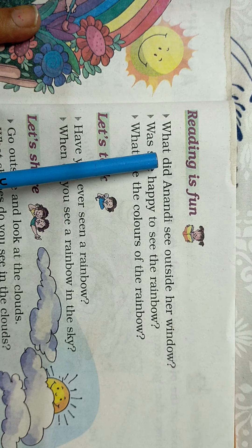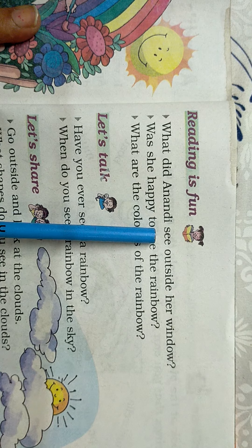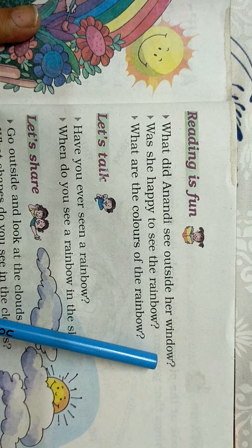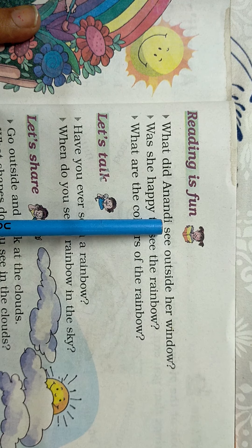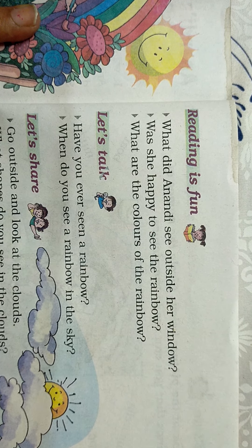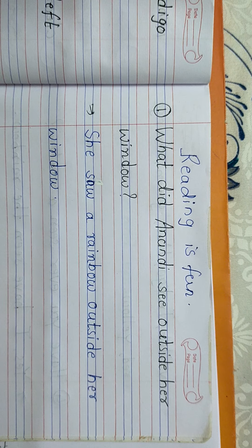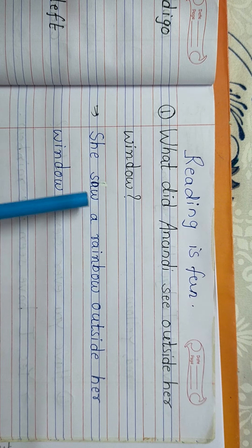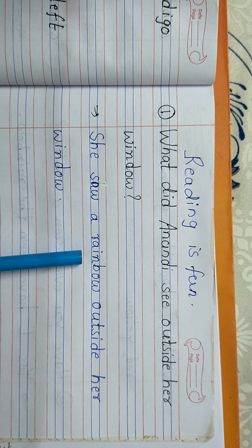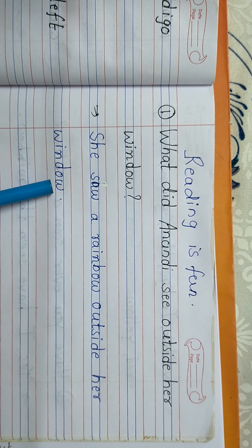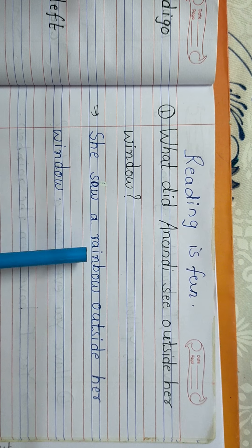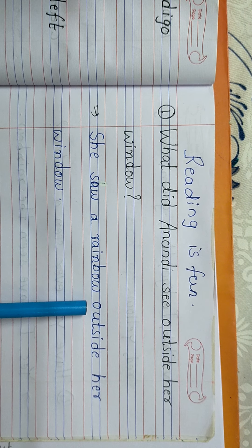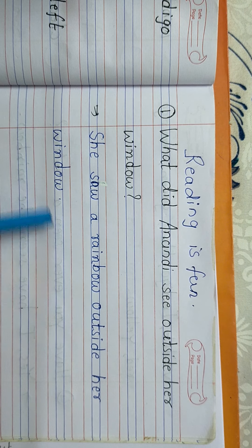First question: What did Anandi see outside her window? Anandi saw a rainbow outside her window. She saw a rainbow outside her window.